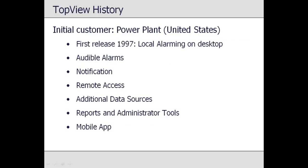Top View started out as a custom application created for a power plant customer in 1997. The customer wanted a small window running on their desktop that showed the current value of a few process measurements. The application was then modified to allow the user to enter limit conditions for the monitored points, along with an audible beep if a limit was violated.